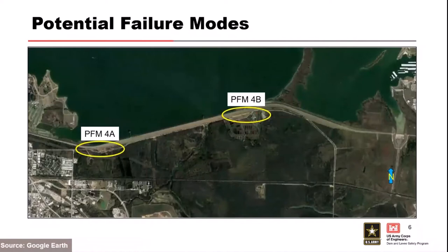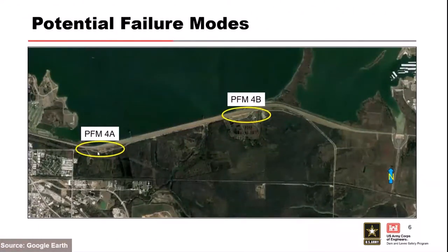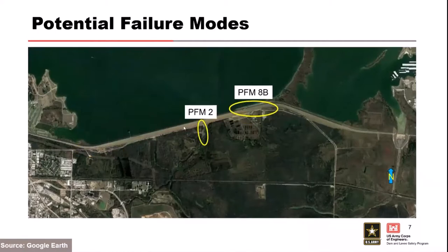For PFM 4A and 4B, the inspection trench stopped at certain stations, which resulted in end-around flow around that inspection trench, designating the two locations. PFM 2 is at the outlet works. PFM 8 is a 2,000-foot-long section on the upstream side of the embankment that we addressed for slope instability.